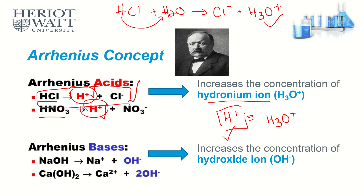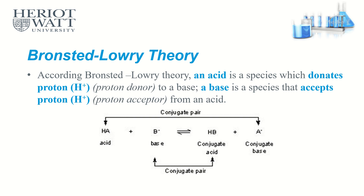For Arrhenius bases, a base must be able to dissolve in water — which means it's an alkali — and it must produce or increase the concentration of hydroxide ions OH⁻. Any compound that dissolves in water producing OH⁻ is called an Arrhenius base or Arrhenius alkali. So Arrhenius acid produces H⁺ in water; Arrhenius base produces OH⁻ in water.